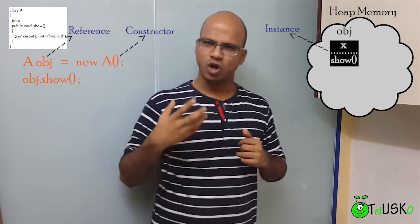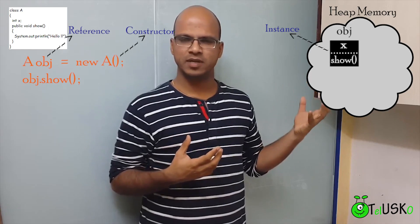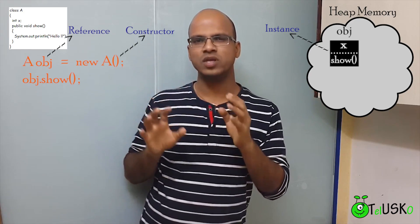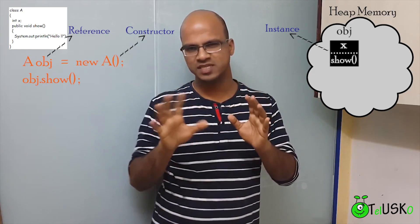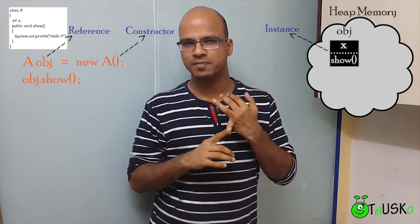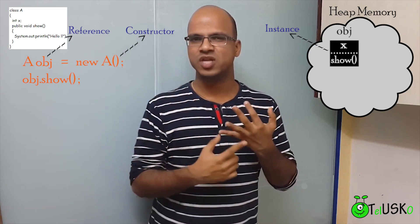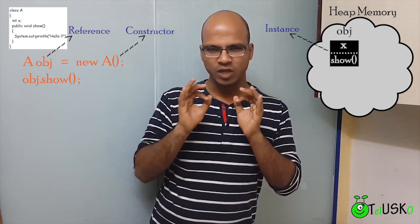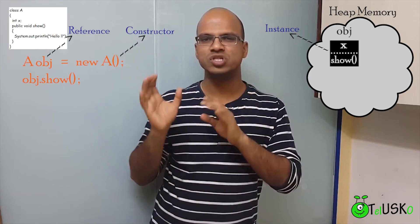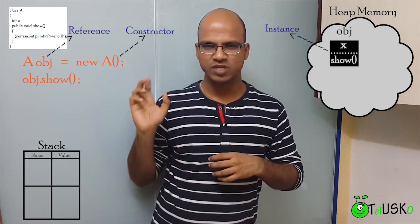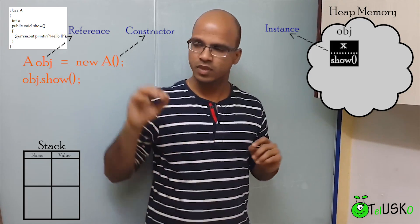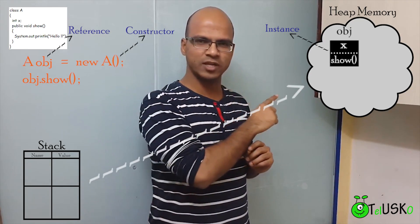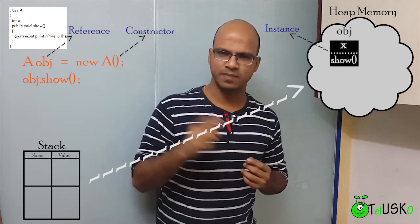Now question arises, we get the object inside heap memory, but where is your obj? Now all these references are called as variables. Variables are of two types. We have primitive type variables and we have reference type variables. This obj is a reference type variable. And all these variables will belong to stack memory. So we have a stack memory here, and that's an object there. So we have a direct link from this value to that value.